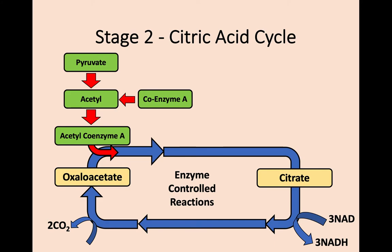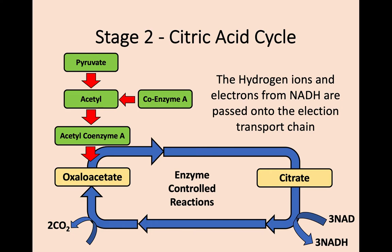Through a series of enzyme-controlled reactions, this citrate is gradually converted back into oxaloacetate, resulting in the release of carbon dioxide. This is a cycle: as long as more acetyl coenzyme A is being produced, the oxaloacetate combines again, breaks down to citrate, and is processed back into oxaloacetate, and so on until there is no acetyl coenzyme A available. Most importantly, as citrate is converted back into oxaloacetate, dehydrogenase enzymes remove more hydrogen ions and electrons, passing them to NAD to generate NADH, which is then passed on to the electron transport chain where large amounts of ATP will be generated.